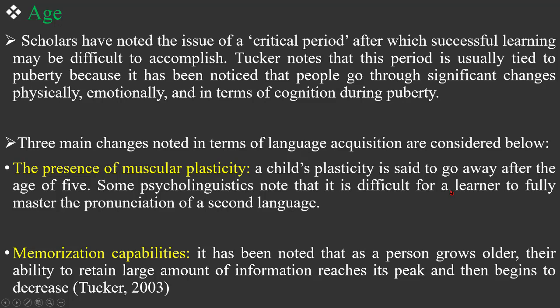Because of the child's plasticity, which goes away after the age of five, this creates a problem for a learner to fully master the pronunciation of a second language. Most people who learn another language as adults don't fully master the pronunciation. We may use language accurately, but the pronunciation is not perfect. However, when you are a child under the age of five, you can learn to speak another language like a native speaker.